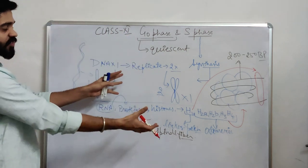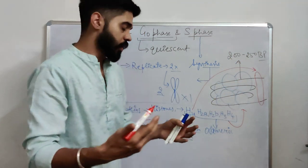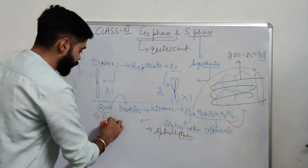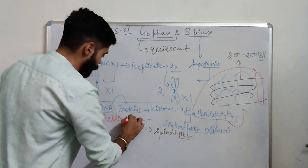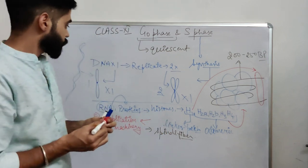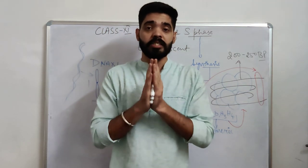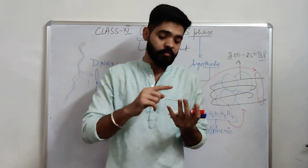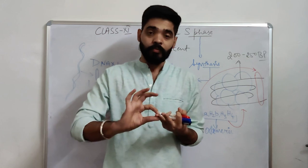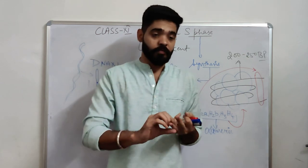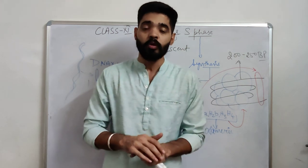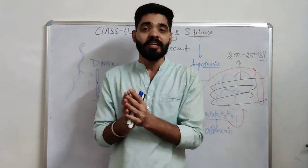Talking about the complete S phase: more proteins being formed include the replication machinery. Everything in the body is completed with the help of proteins — from digestion to oxygen transport. Proteins function as enzymes, and everything depends directly on them. For DNA replication, specific enzymes are required.